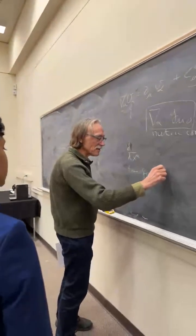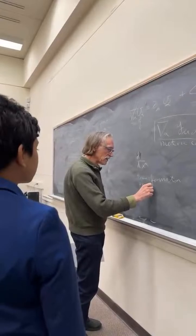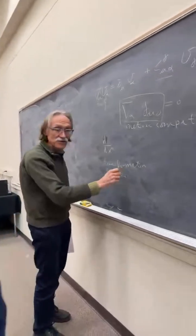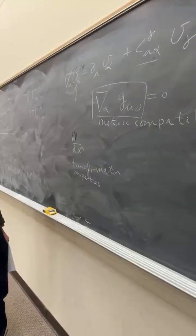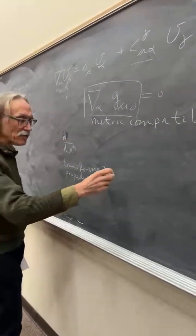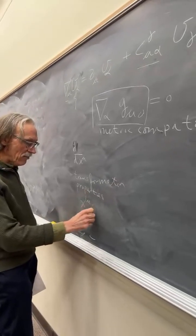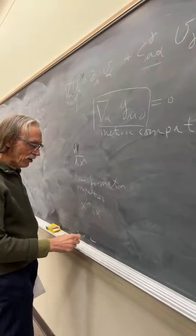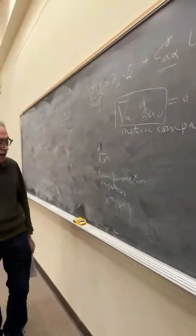Transformation properties under coordinate transformations. That means we change coordinates. That means we have new coordinates, that is x mu prime, which are functions of the old coordinates. So they depend on all coordinates.